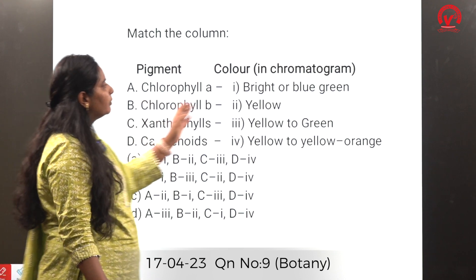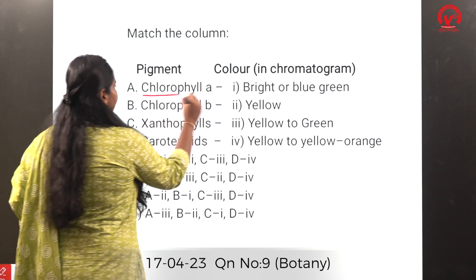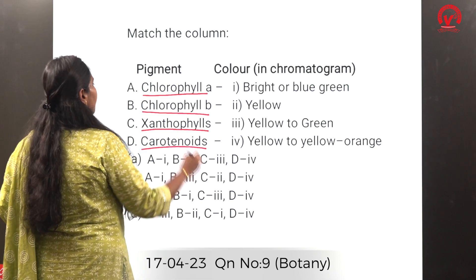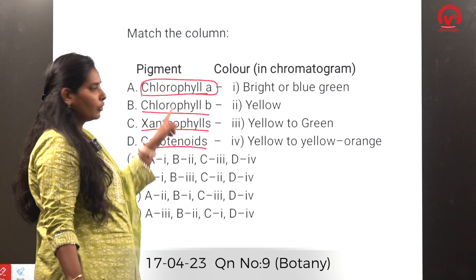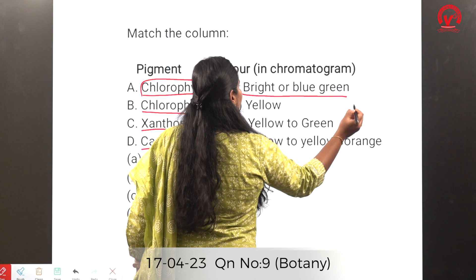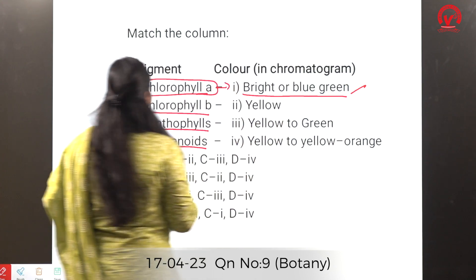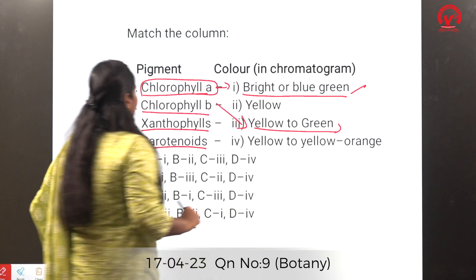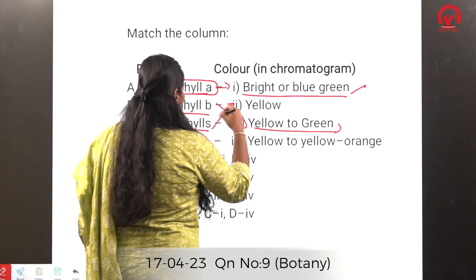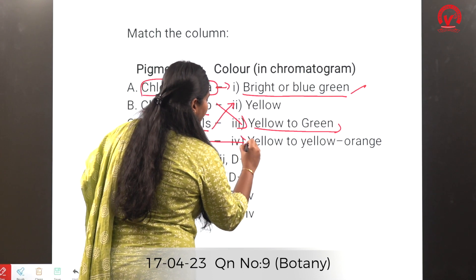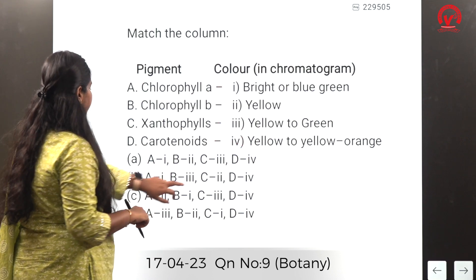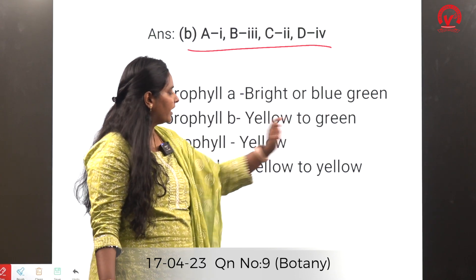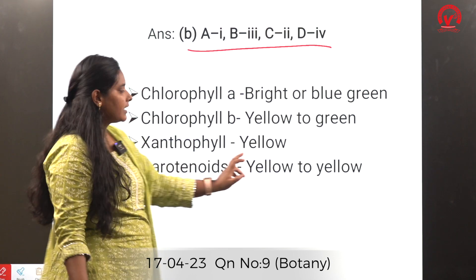Match the column of pigments and their colors. Chlorophyll A is a primary pigment helpful for photosynthesis and its color is bright or blue-green. Chlorophyll B is yellow to green. Xanthophyll is yellow. Carotenoid is yellow to yellow-orange. So the correct option is B.